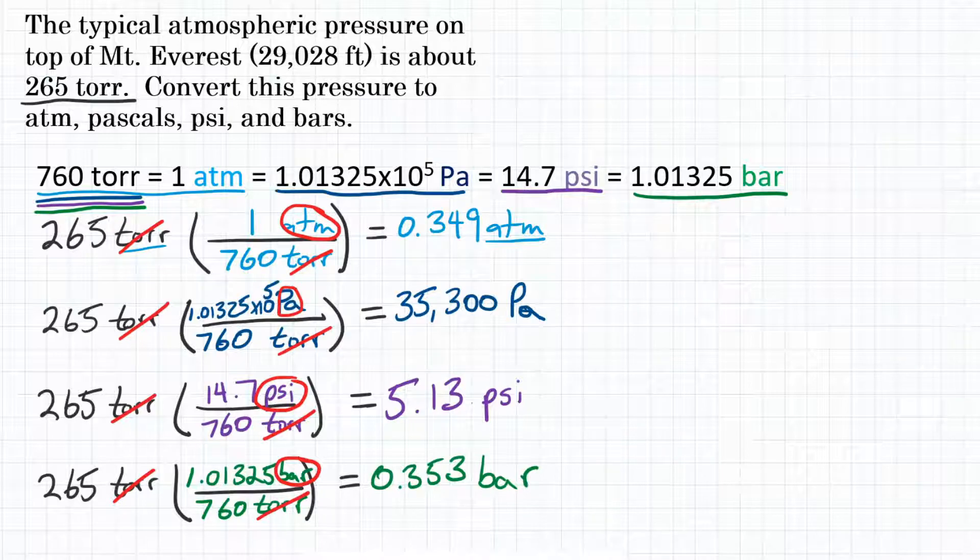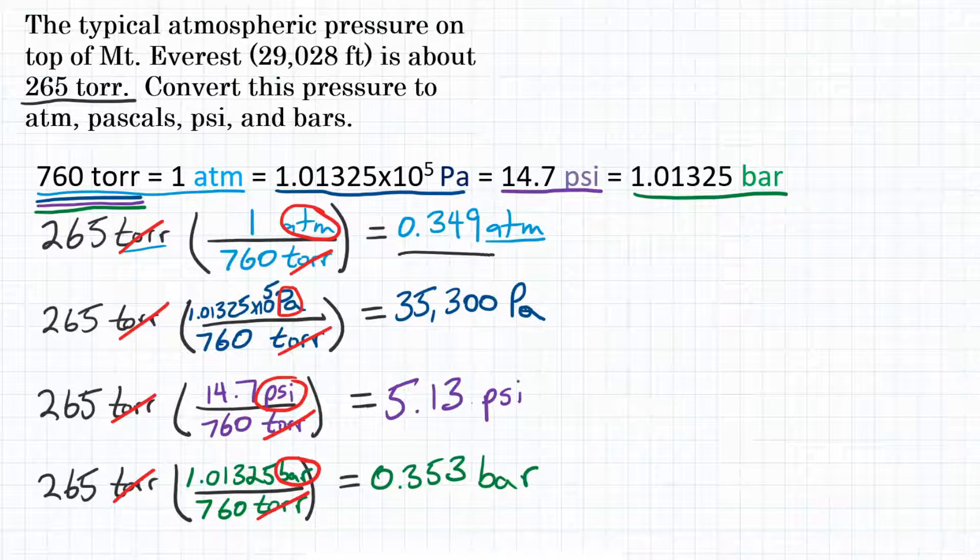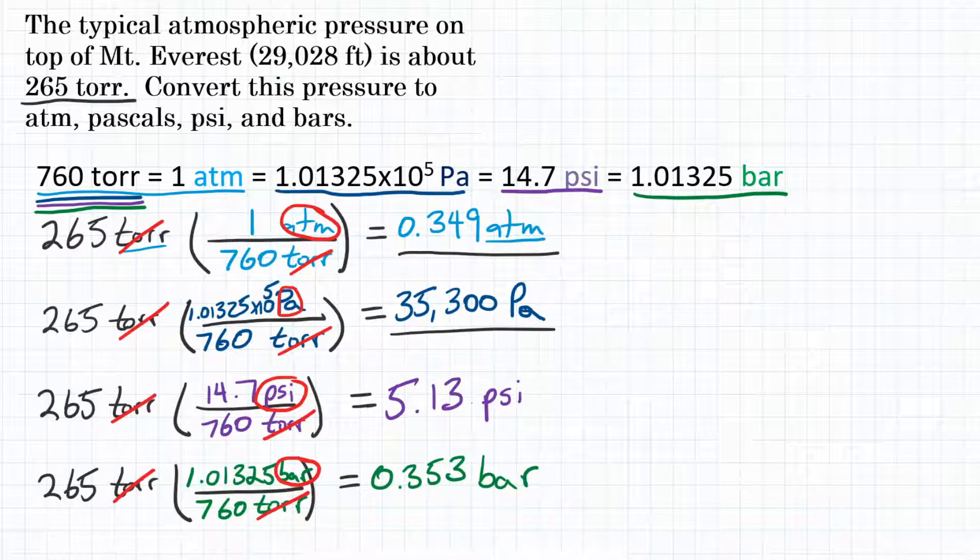The atmospheric pressure at the top of Mount Everest is 265 torr. Converting that to atmospheres, pascals, psi, and bars, we would get 0.349 atmospheres, 35,300 pascals, 5.13 psi, and 0.353 bars.